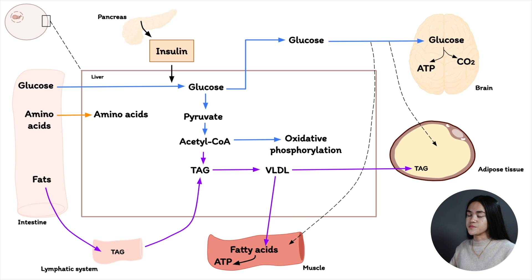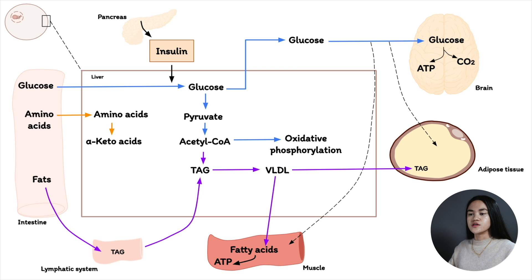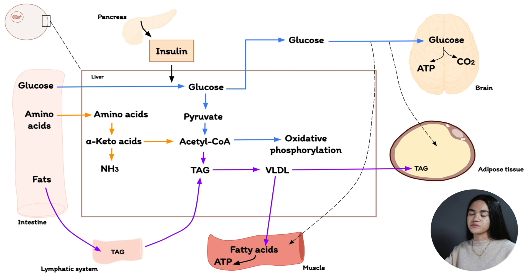Amino acids are degraded by removing the ammonia group, yielding alpha-keto acids or carbon skeletons. The ammonia is converted to urea via the urea cycle for excretion. Since amino acids can't be stored, they are diverted to protein synthesis. Triacylglycerols travel through the lymphatic system to the liver, muscle, and adipose tissue.